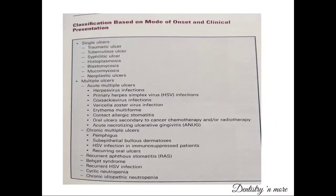The classification can be based on the mode of onset and the clinical presentation, as given in the textbook of oral medicine by Ravi Kiran Angol. The classification is given under these subheadings: single ulcers, multiple ulcers, and chronic multiple ulcers, with each condition listed under them. The same classification is also given in Burkitt's oral medicine.